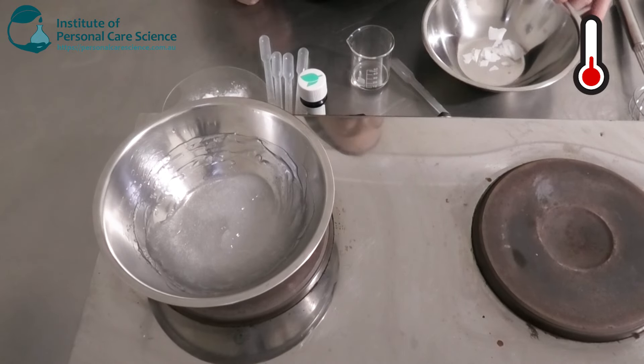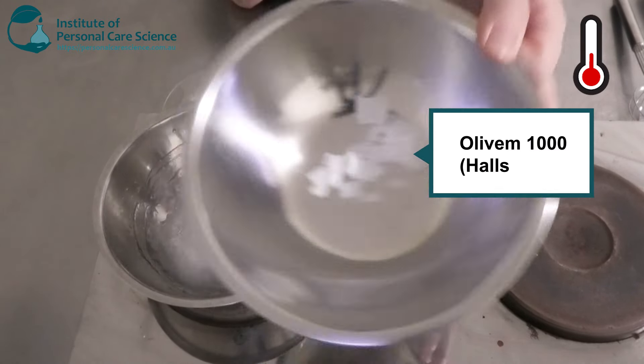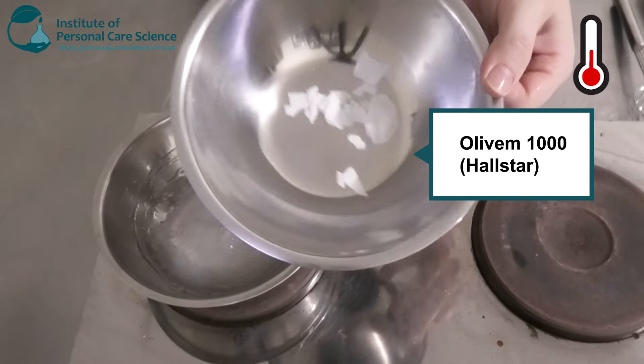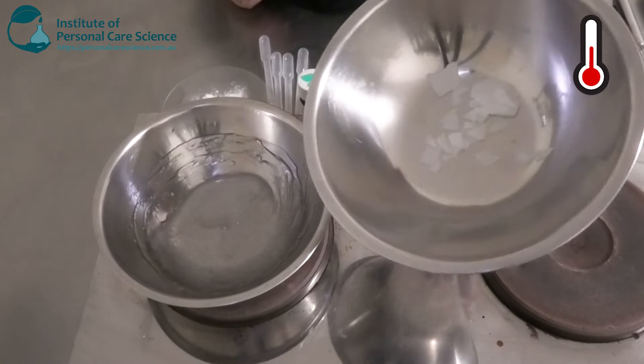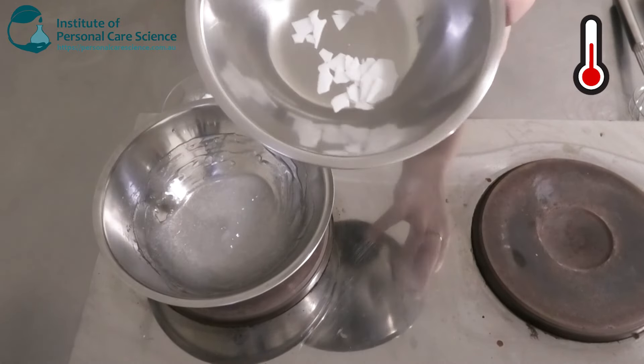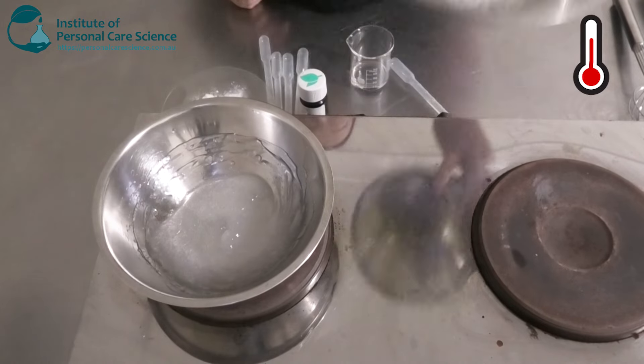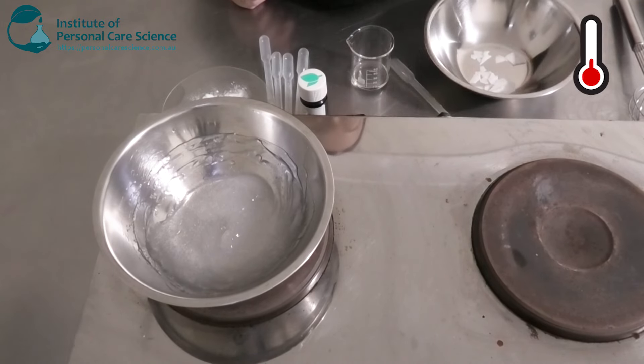Okay, and while that's heating, I'm going to put together my oil phase. So I've got some Olivem 1000 in here. This is a non-ionic emulsifier and it's also waxy, so it's going to build stability and viscosity in our deodorant.